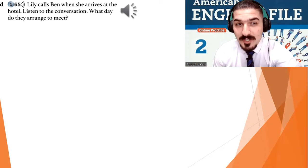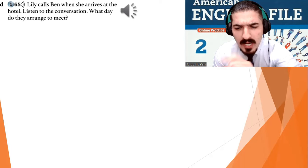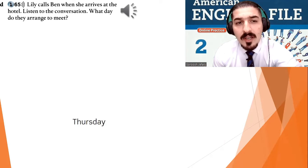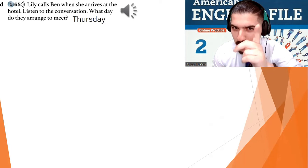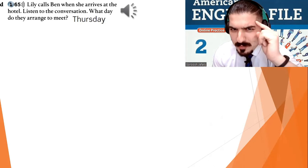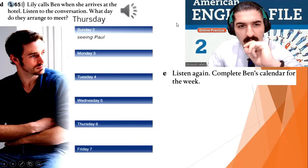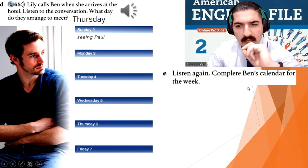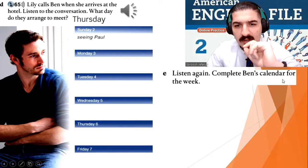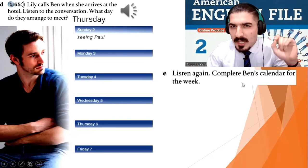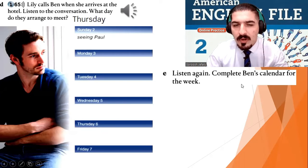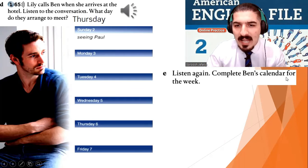It's getting interesting. What day do they arrange to meet? Thursday — you're right, as always, because you're smart. Now I want you to listen again. Complete Ben's calendar for the week. Sunday: seeing Paul.